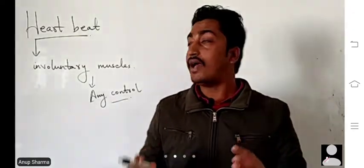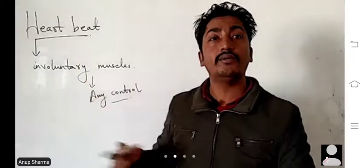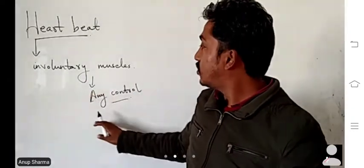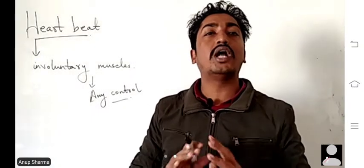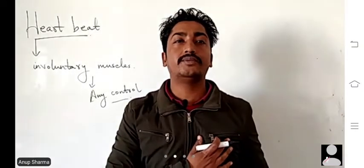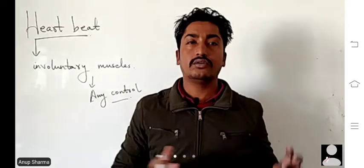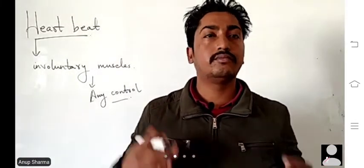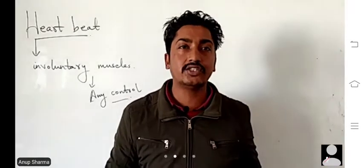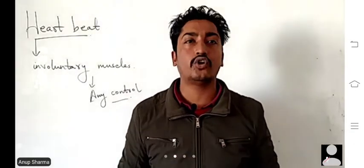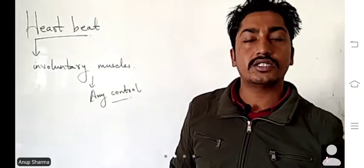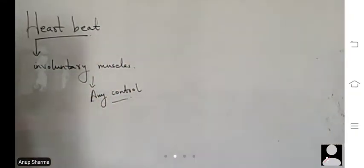But we also have involuntary muscles in our body — those muscles which we can't control. For example, the heart. Can we control the heart? I don't want to pump my heart — can I stop it? No, I can't stop it because it is an involuntary muscle and we don't have any control over involuntary muscles.